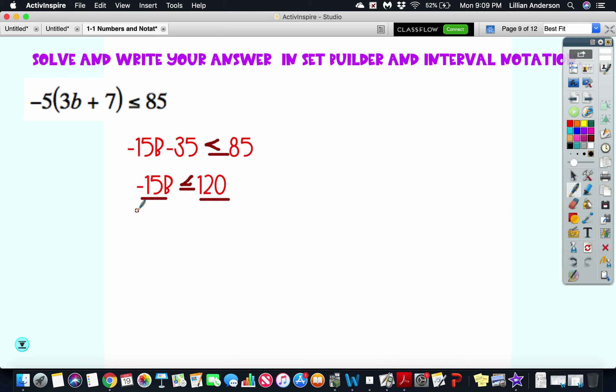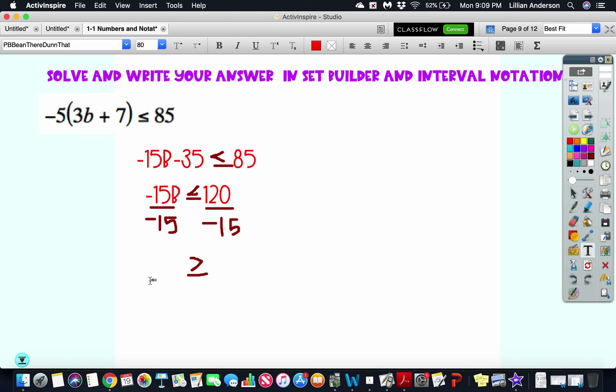We're going to divide both sides by negative 15. And remember, when you divide both sides by a negative and you're dealing with inequality, the sign is going to switch. So now this becomes greater than or equal to. We'll have b is going to be greater than or equal to 120 divided by negative 15, which is negative 8.